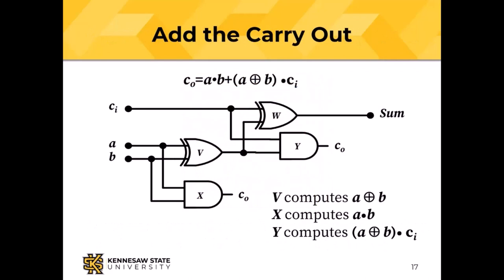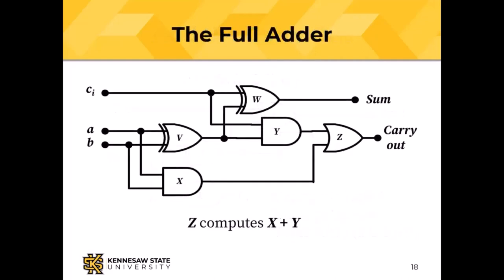Gate X computes A AND B, and gate Y computes (A XOR B) AND C_i. Since only one of those carry-out terms can be true at a time, we OR them together with gate Z to get the final carry-out. That circuit is a full adder — it adds two bits including a carry-in and produces a sum and carry-out.